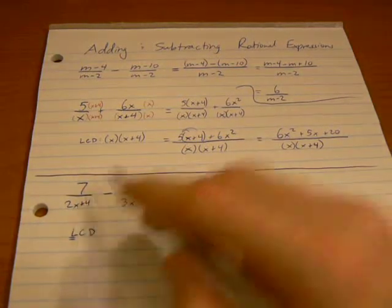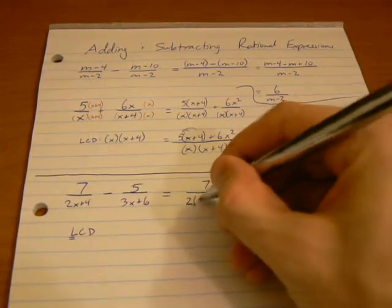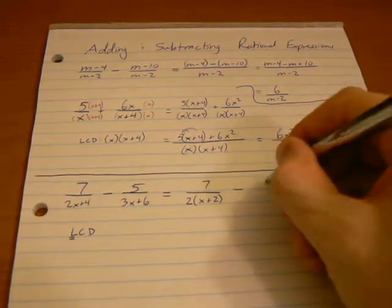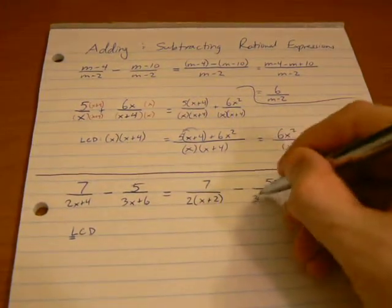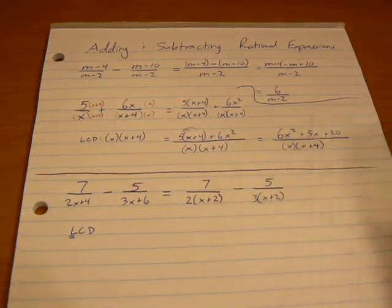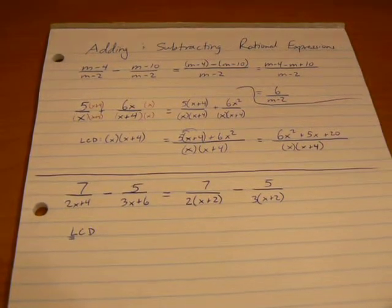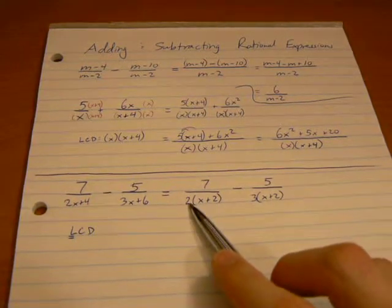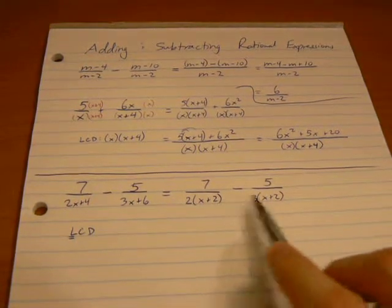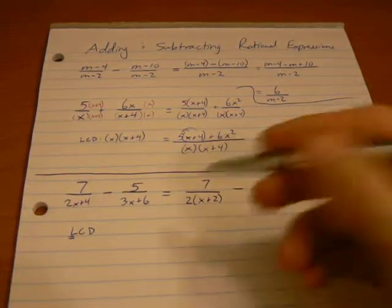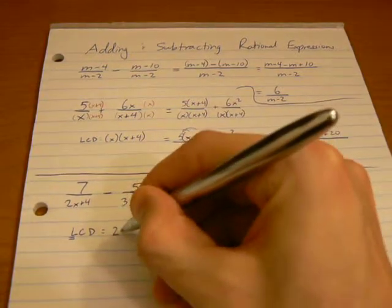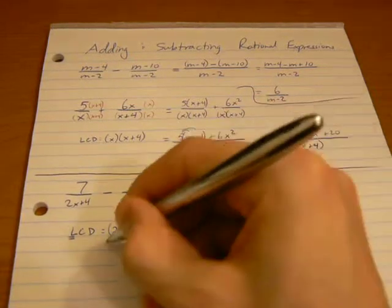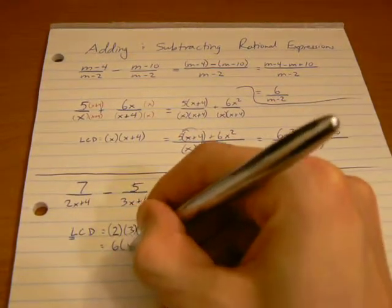So, to factor 2x plus 4, we have a common factor of 2, which we can pull out there, and we're going to have 2 times x plus 2. And to factor 3x plus 6, I'm going to factor out a 3, and that's x plus 2. Now, we look at our lowest common denominator, the product of all the different factors we have. We have 2, 3, and x plus 2 in both there. So, our lowest common denominator is actually going to be 2 times 3 times x plus 2, or 6 times x plus 2.